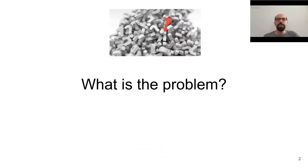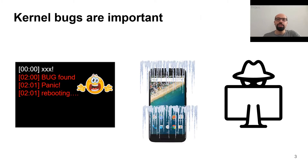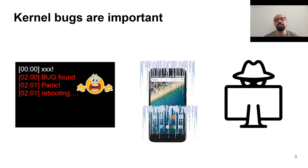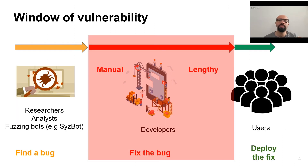First, let's see what the problem is that we try to solve. Kernel bugs are important and dangerous. Even the simplest one can crash the system and cause a system reboot. They might even result in system hang or UI freeze, and in some cases they might result in exploitable data corruptions. When someone finds a kernel bug and reports it to kernel developers,